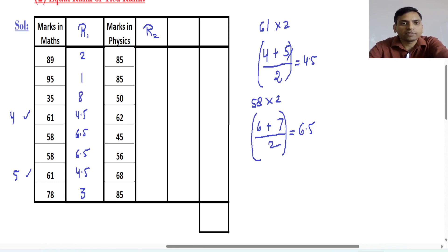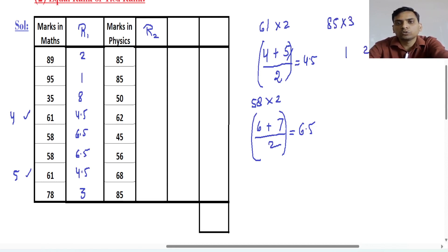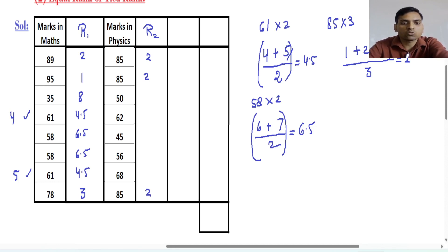Now for the second rank column R2 in physics: the highest marks is 85, and this appears 3 times. The first 3 ranks are 1, 2, 3, and we take their average, which is 2. So we put rank 2 for all three occurrences of 85. We have now used ranks up to 3. Next number is 68 — rank 4. Next is 62 — rank 5. Next is 56 — rank 6. Next is 50 — rank 7. Next is 45 — rank 8.